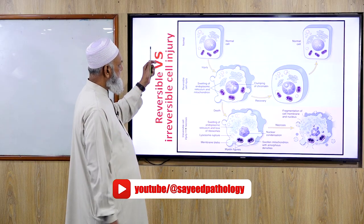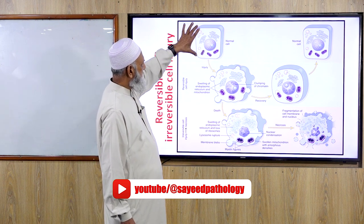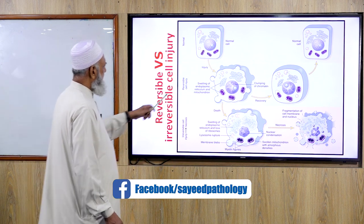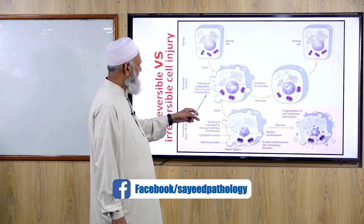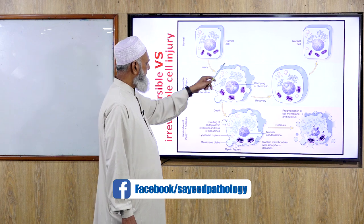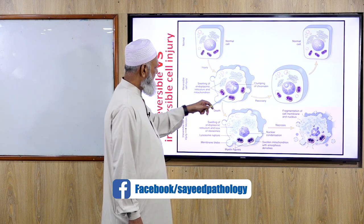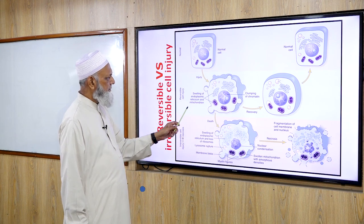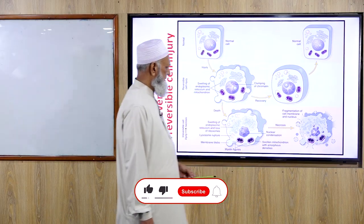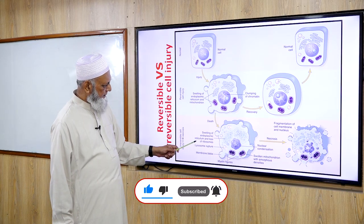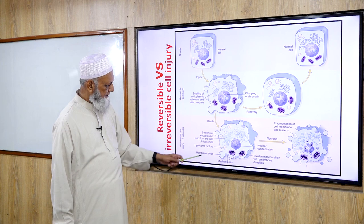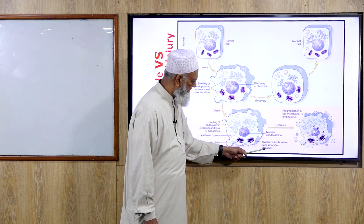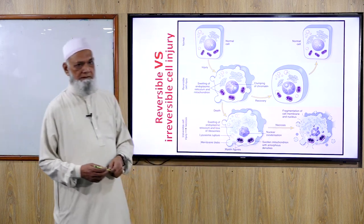Reversible versus irreversible cell injury: reversible cell injury shows cellular swelling, appearance of blebs, effacement of microvilli, swelling of different organelles, nuclear chromatin clumping — if the inciting agent is withdrawn, the cell recovers to normal. Irreversible injury shows cellular death, swelling of the endoplasmic reticulum and loss of ribosomes, lysosomal rupture, membrane blebs, nuclear condensation, swelling of mitochondria with amorphous densities, and ultimately necrosis and/or apoptosis.